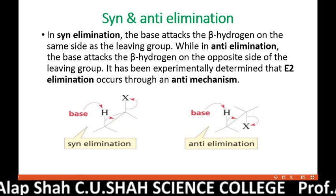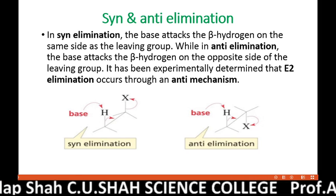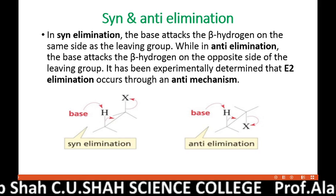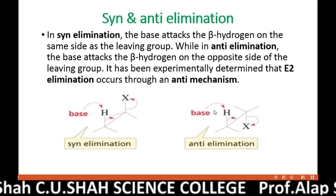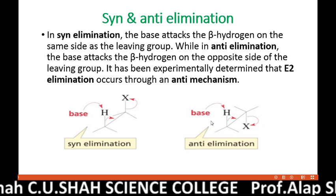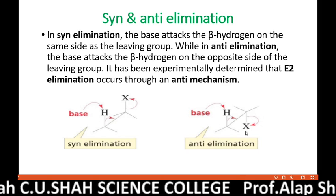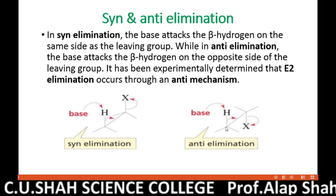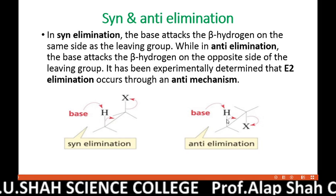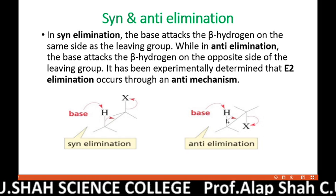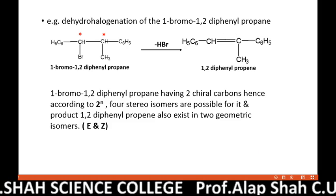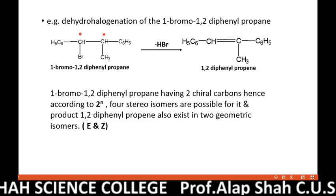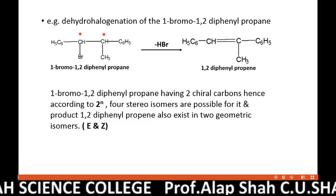Bimolecular elimination — the E2 reaction — occurs as per the anti-mechanism. This means that the leaving group and its beta hydrogen are eliminated from opposite sides. Let's see an example.